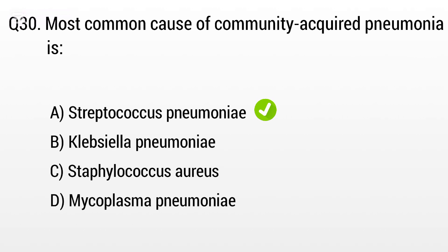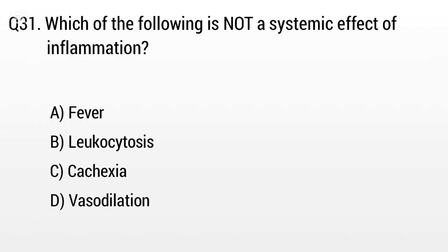Question 31. Which of the following is not a systemic effect of inflammation? The right answer is Option D: Vasodilation.